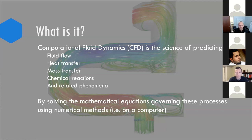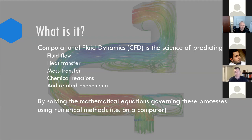CFD encompasses a large range of various processes and phenomena — for example, fluid flow, heat transfer, mass transfer, chemical reactions, and more. For us, we're really focusing on what happens to a droplet inside of a vapor stream, and that's really where it gets interesting. There can be some very high competitive advantages that can be gleaned from that.